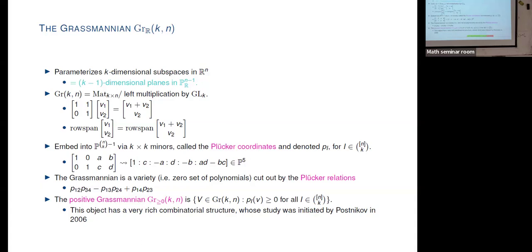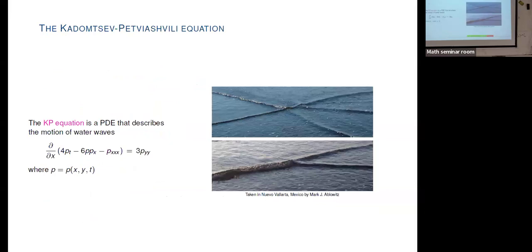It turns out positivity also gives us interesting things in physics. I'll talk about two physics directions today. The first is about water waves — there is a partial differential equation that describes the motion of water waves called the KP equation, named after Kadomtsev and Petviashvili. It describes the behavior of water waves like the ones in the pictures. We're solving for a function u of space variables x and y, and time variable t, which records the height of the wave.